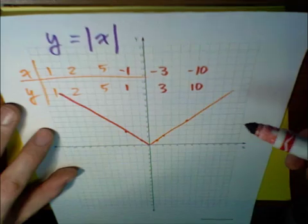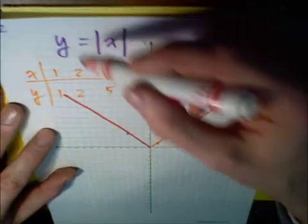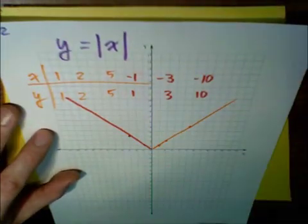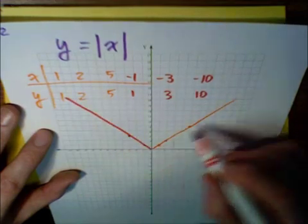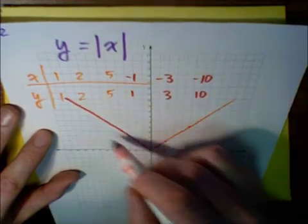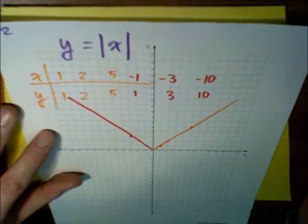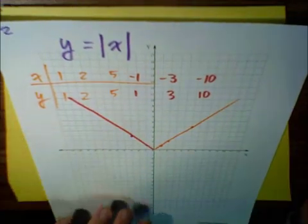So the parent graph of y equals absolute value of x looks like a V, with a perfect 45-degree angle on each side.